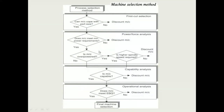Here we can see the flowchart of the machine selection method. First, we have to identify the process sequence of operations. Based on this, we select the machine. The next step is to check whether the machine can cope with the part size — that is, whether the component matches the machine.